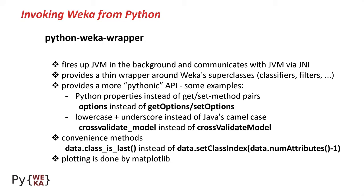Here are some examples. Python properties are, for example, used instead of the Java get/set method pairs. For example, options instead of getOptions/setOptions. It uses lowercase plus underscore instead of Java's camel case. So crossvalidate_model instead of cross capital V validate capital M model. It also has some convenience methods that Weka doesn't have. For example, data.class_is_last instead of data.setClassIndex data.numAttributes minus one. And plotting is done via matplotlib.